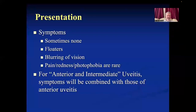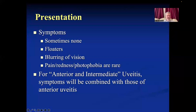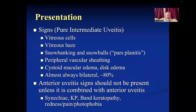The symptoms are very different from anterior uveitis. Sometimes there aren't any symptoms at all — a patient may be referred after cells are noticed during a routine refraction. They may have floaters or blurred vision, the latter often from macular edema. Anterior segment symptoms like pain, redness, and photophobia are rare unless it's a combined anterior and intermediate case.